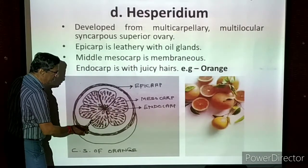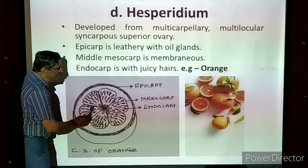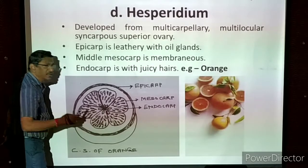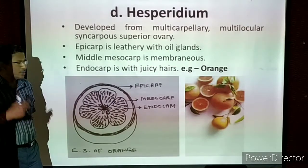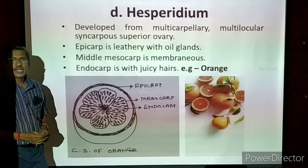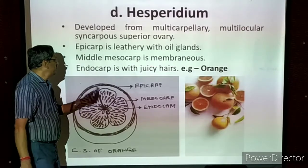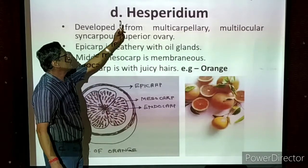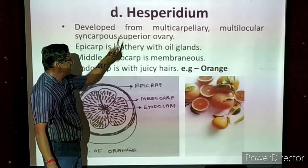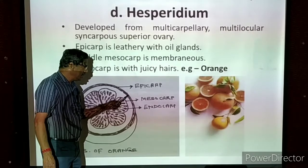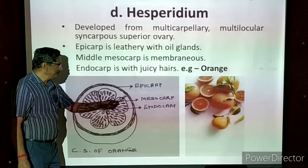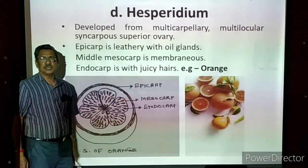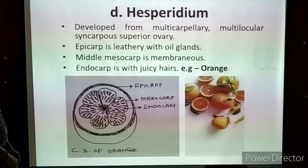In the orange, you can see many divisions that can be separated from each other. When you take the inside, a lot of juicy hairs are present. So the endocarp has juicy hairs. Example: orange. The hesperidium has a leathery epicarp with oil glands, a middle membranous mesocarp, and an inner endocarp with juicy hairs.